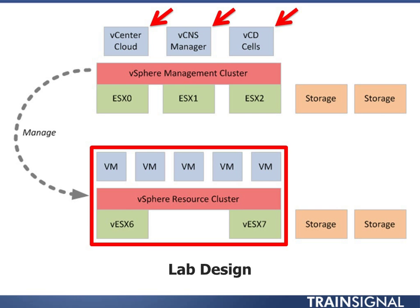The vCenter server managing the cloud environment is where the network lives — where the logical networks have been defined and where the actual switching is taking place. Finally, I've drawn the red box around the vSphere resource cluster because that's where the activity actually takes place. When we apply these different network designs, they live in the resource cluster. None of the networks we define are in the management cluster — it's all defined there and applied in the resource cluster.